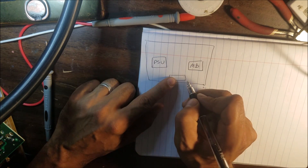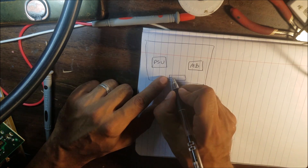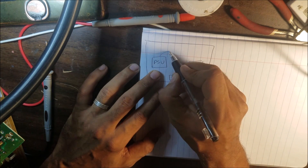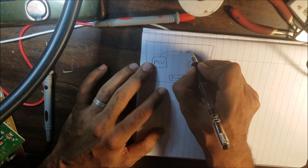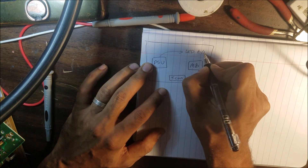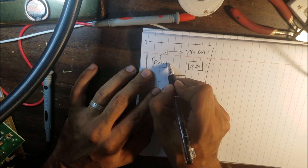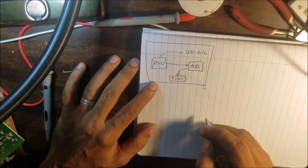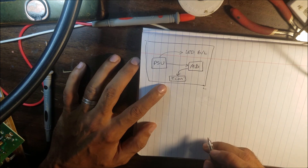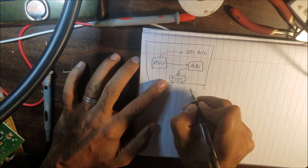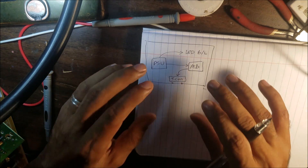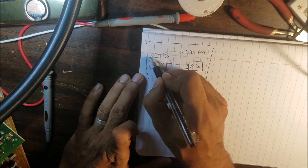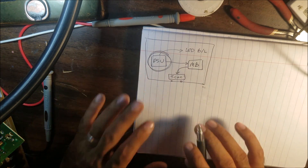We have the T-con board at the bottom for the LED TVs or at the top for the LCD TVs, and we have the cables going to the LED backlight. The power supply gives voltage to the main board. The main board gives voltage and data to the T-con. The T-con gives voltage and data to the LCD screen - that's the sample design we're going to talk about little by little.